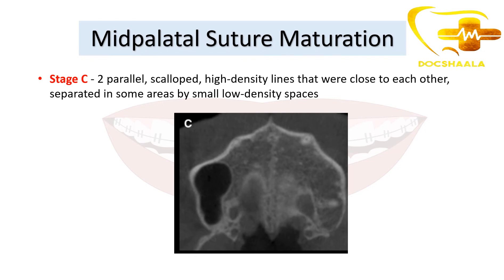Stage C shows two parallel, small, scalloped high-density lines that are close to each other, separated in some areas by small low-density spaces. In this image you can appreciate two suture lines — they are highly scalloped and high-density, very close to each other, but sometimes separated by gaps.